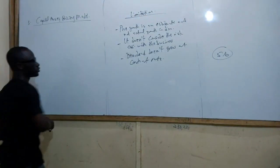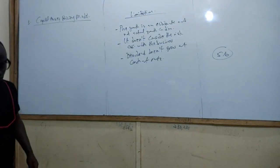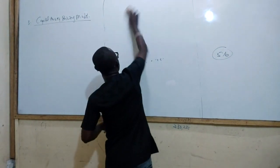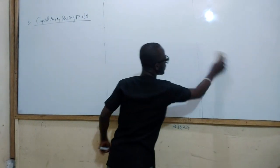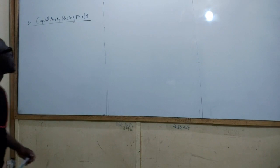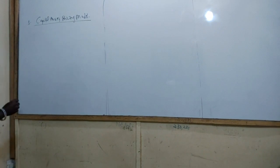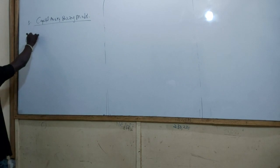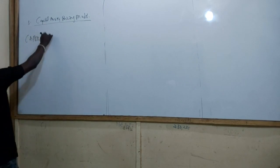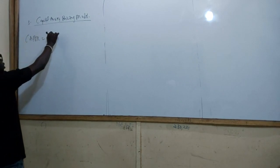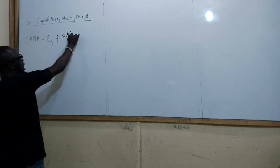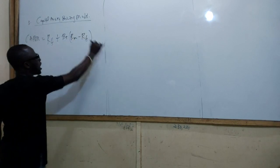That is the third method used in calculating cost of equity from dividend. Now, what is the Capital Asset Pricing Model about? This is where we are calculating cost of capital using this formula: RF plus β times (RM minus RF).